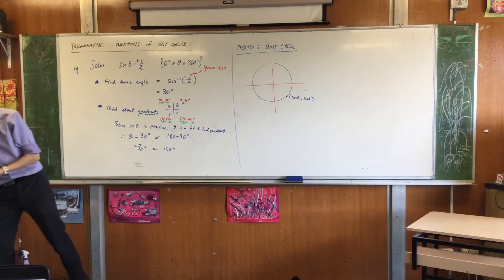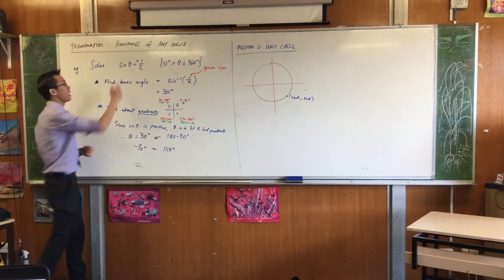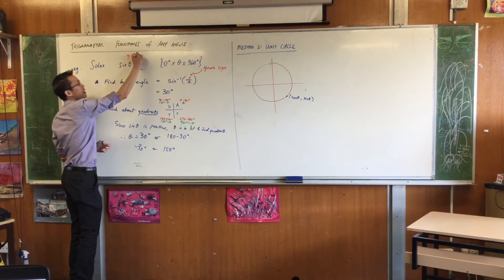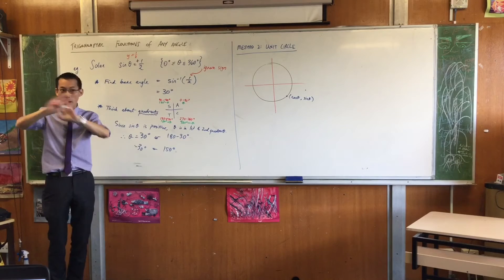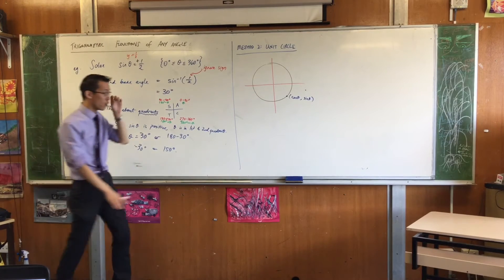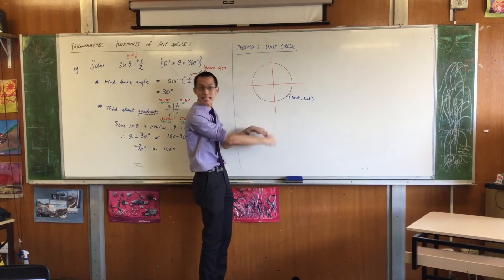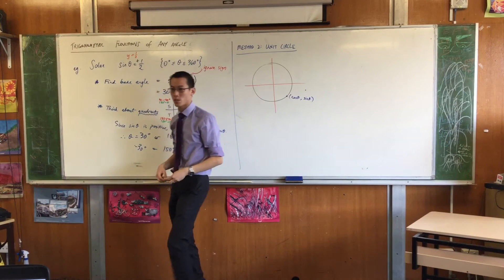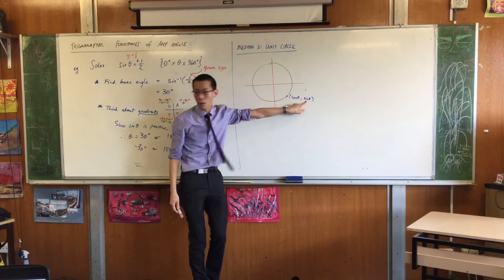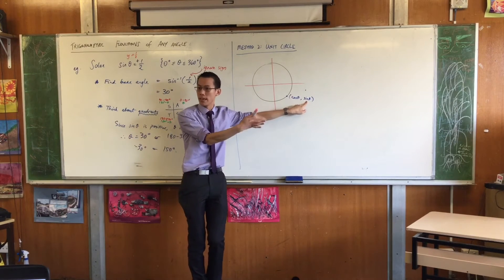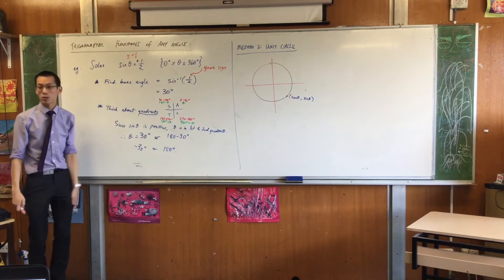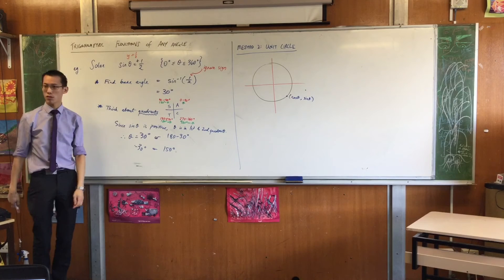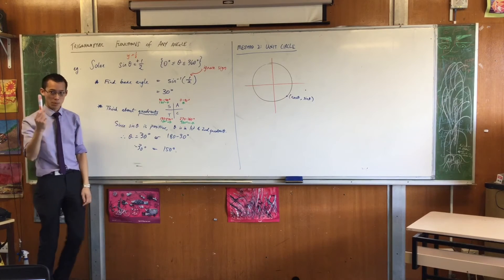So what you're really solving when you see sine theta equals a half is y equals a half. Right? Because that's what sine theta is about. I'm not worrying about opposite and hypotenuse anymore. I'm thinking about where up and down I am on the unit circle, because that's about where I am up and down on the Cartesian plane. Does that make sense? So here's all I'm going to do. I'm going to take y equals a half and I'm just going to draw it on the unit circle. Okay? Now pick up your pen again.